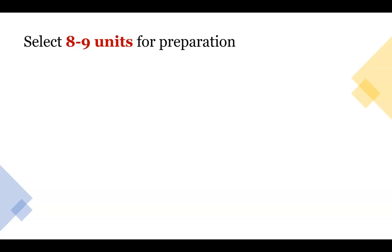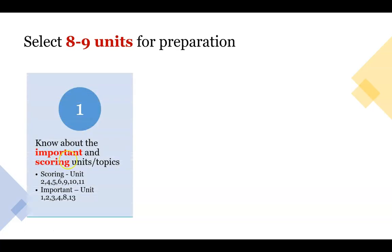The next step is to select eight to nine units for preparation. You must have knowledge of the important and scoring units — the ones which will fetch you maximum marks. The scoring units are those with direct questions and very low chances of negative scores: Unit 2 Cellular Organization, Unit 4 Cell Communication and Signaling, Unit 5 Developmental Biology, Unit 6 Plant Physiology, Unit 9 Diversity, Unit 10 Ecology, and Unit 11 Evolution.